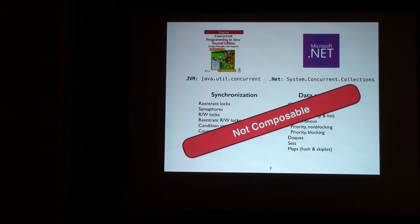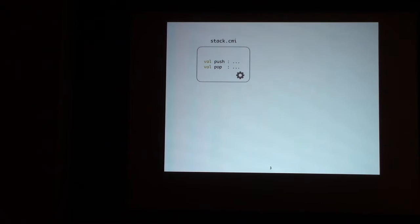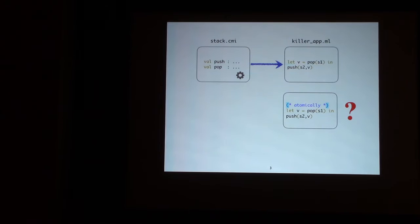But the critical problem with these libraries is that they are not composable. Let's look at a small example. Suppose you have a lock-free stack implementation which provides two operations, push and pop, and assume that these operations are atomic. Now a developer wants to write a killer app. What it does is it pops from one of the stacks and pushes a value into another.